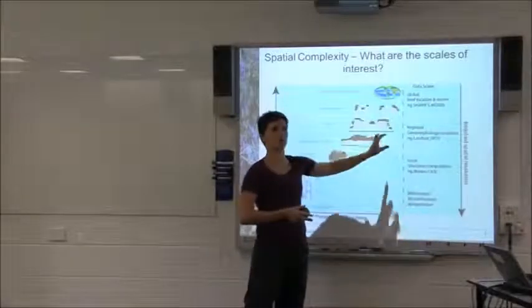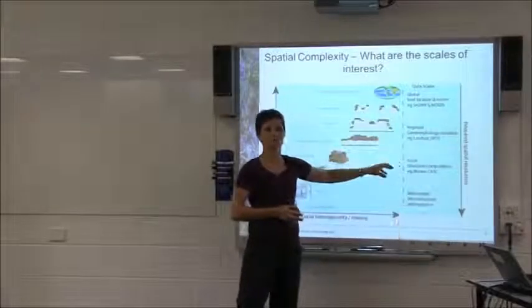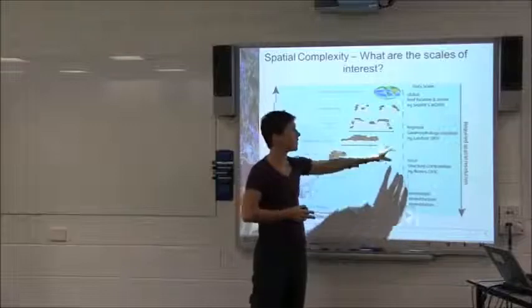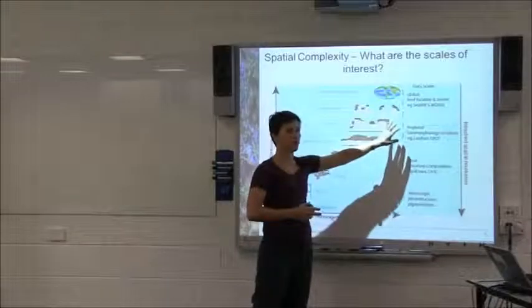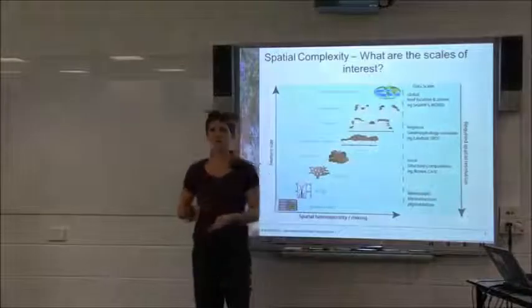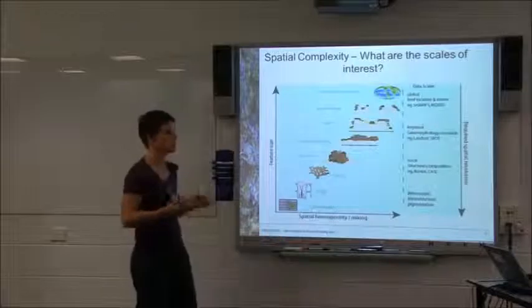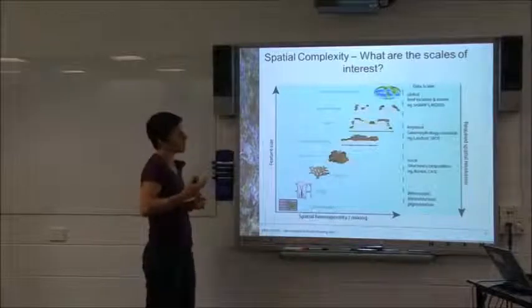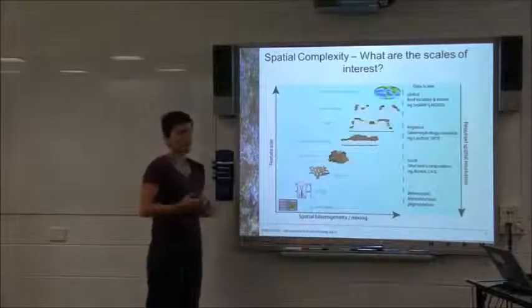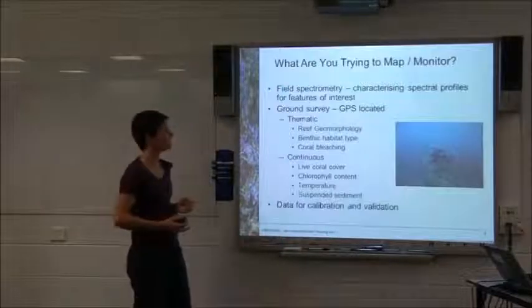At the bottom we have microscopic features. Then stepping into Ikonos, WorldView-2, and some airborne data. Then we can move into Landsat, and up the top SeaWiFS or MODIS. So your image types are different to match the scale of what you're looking at.